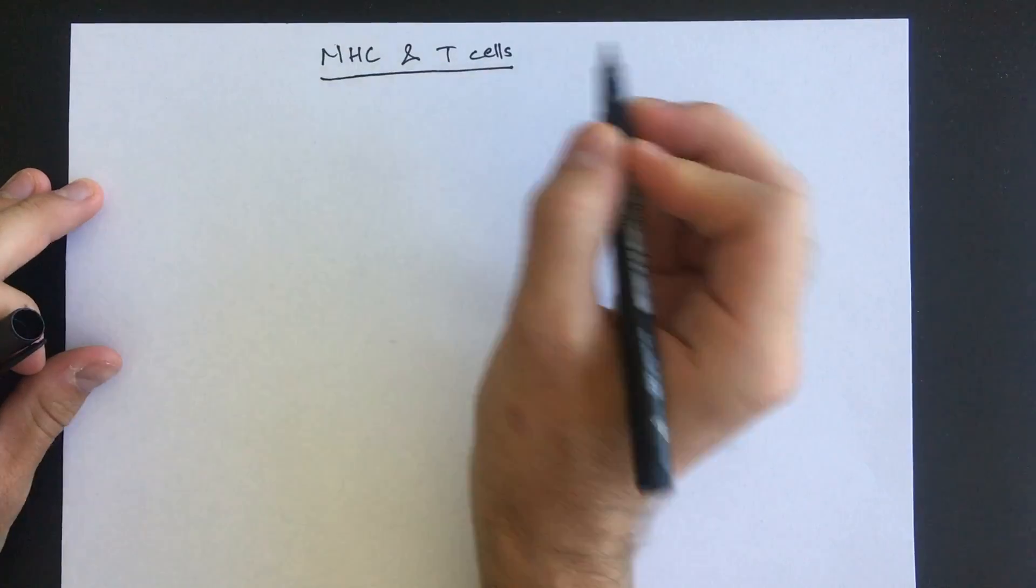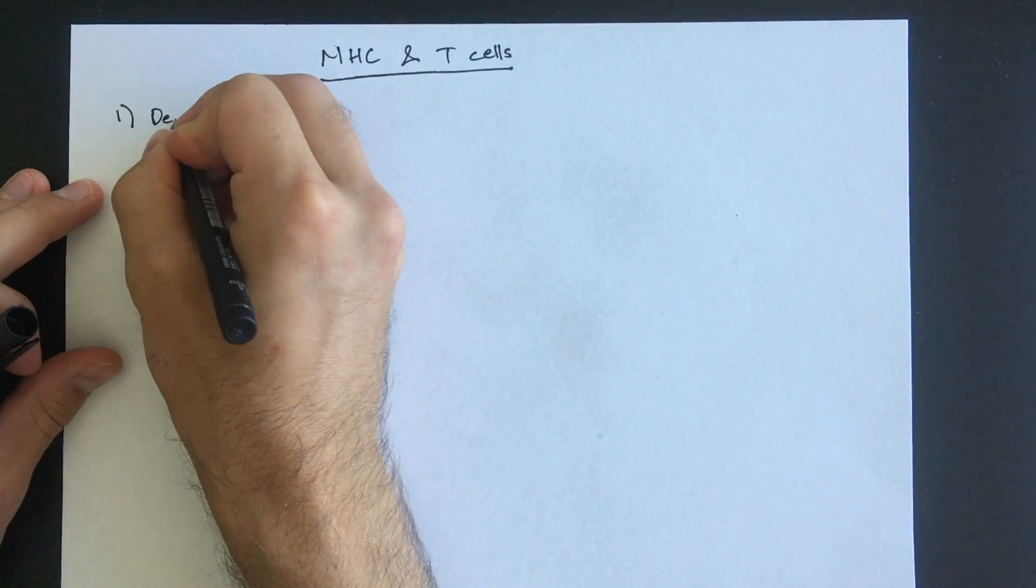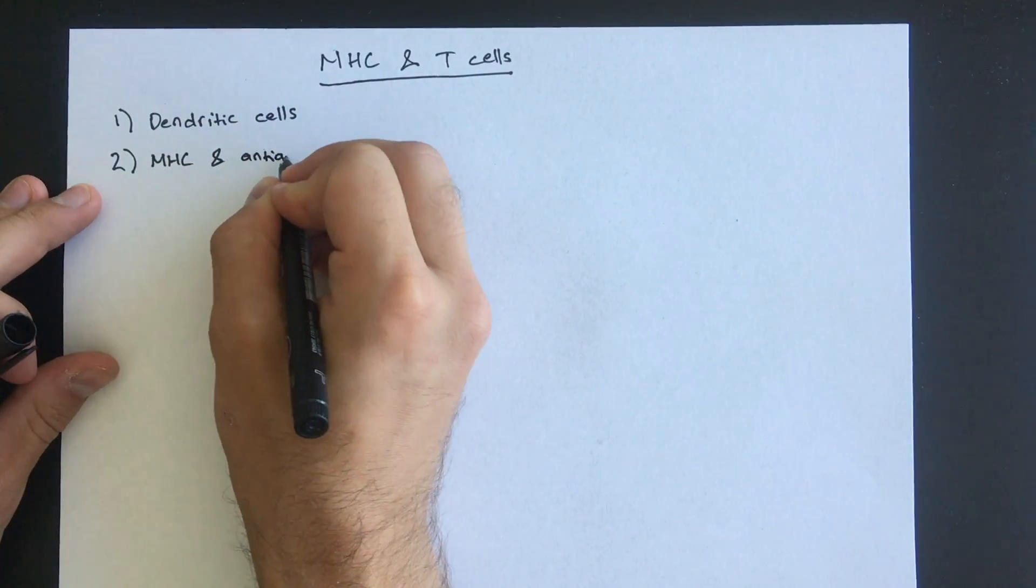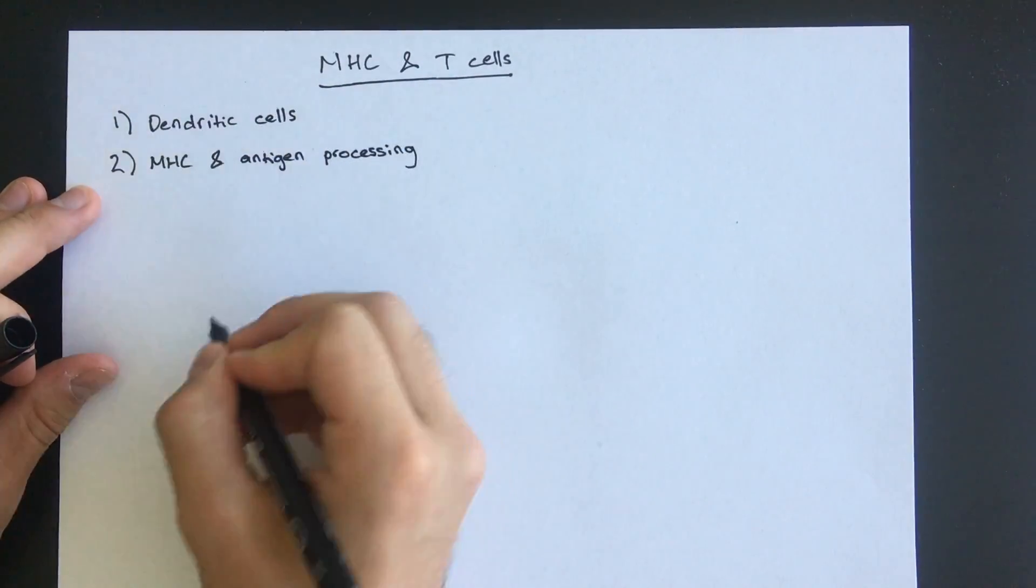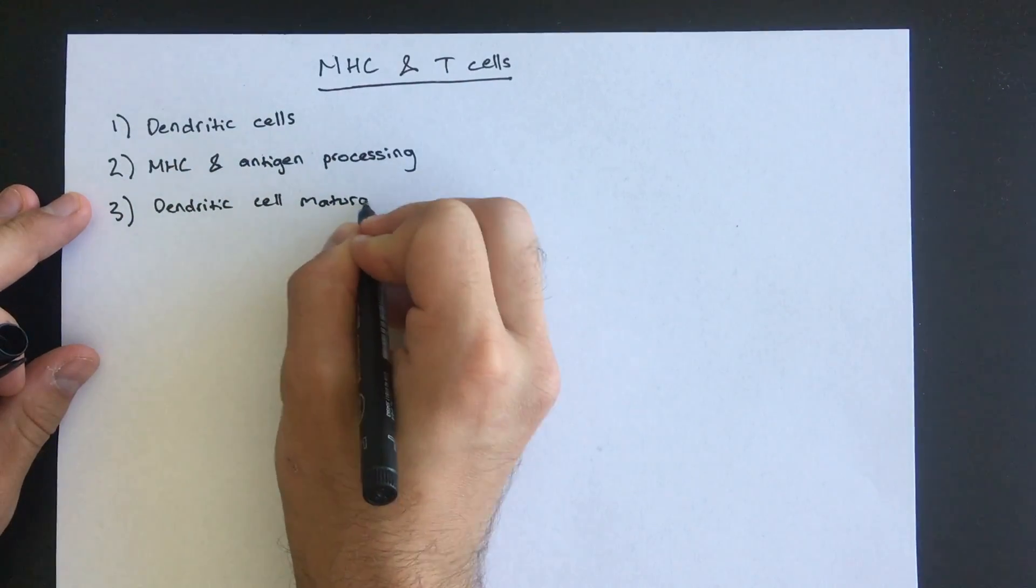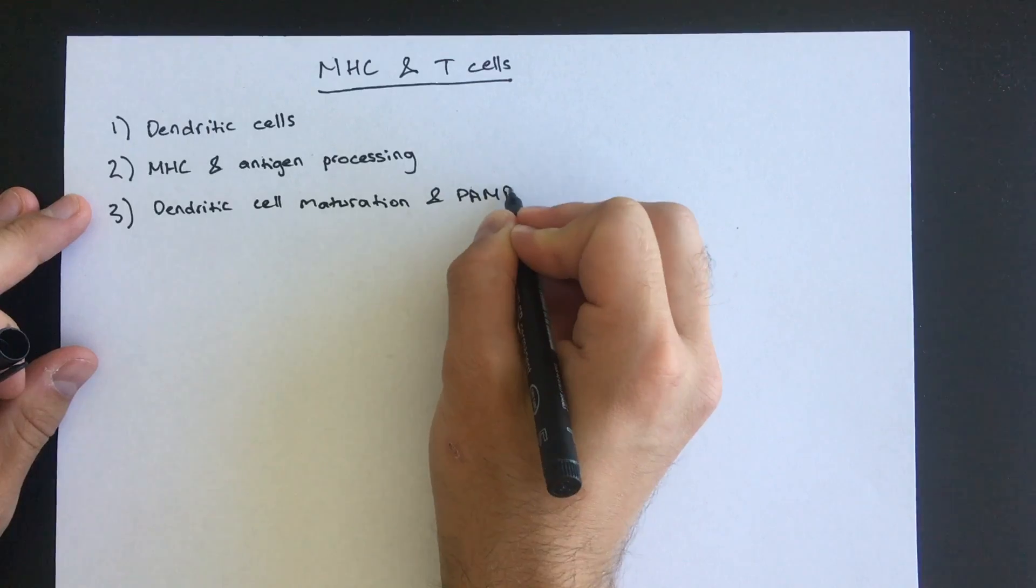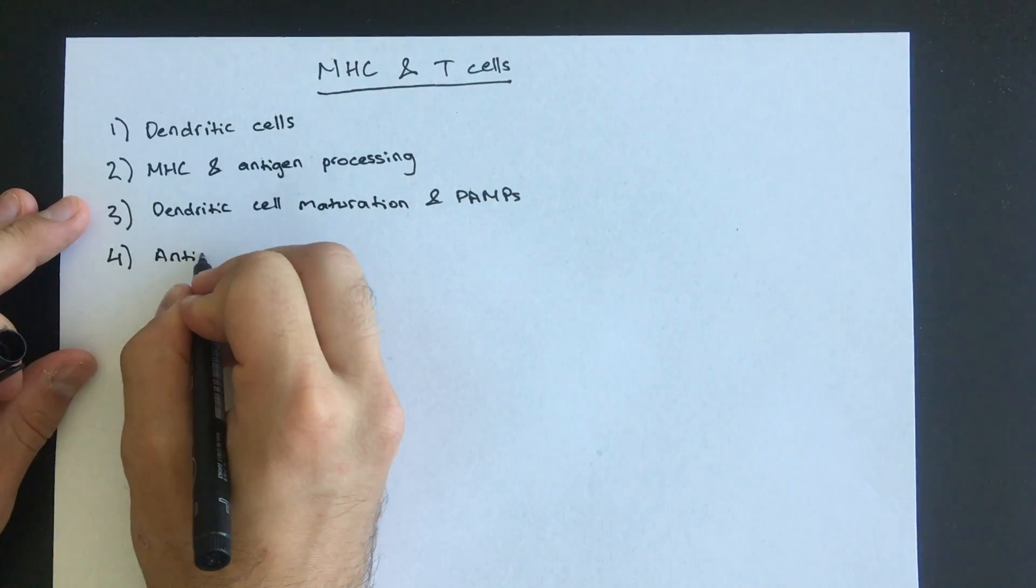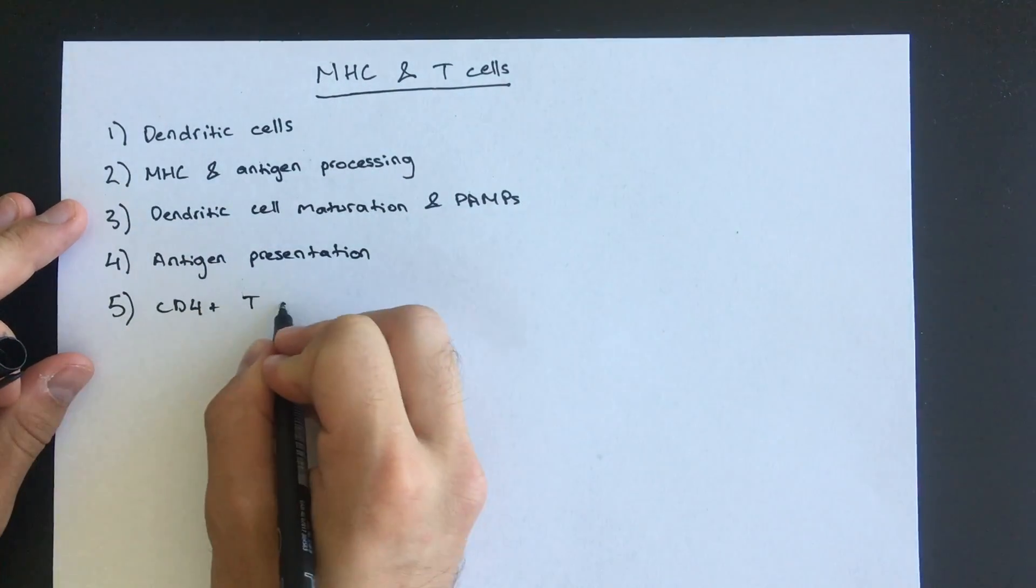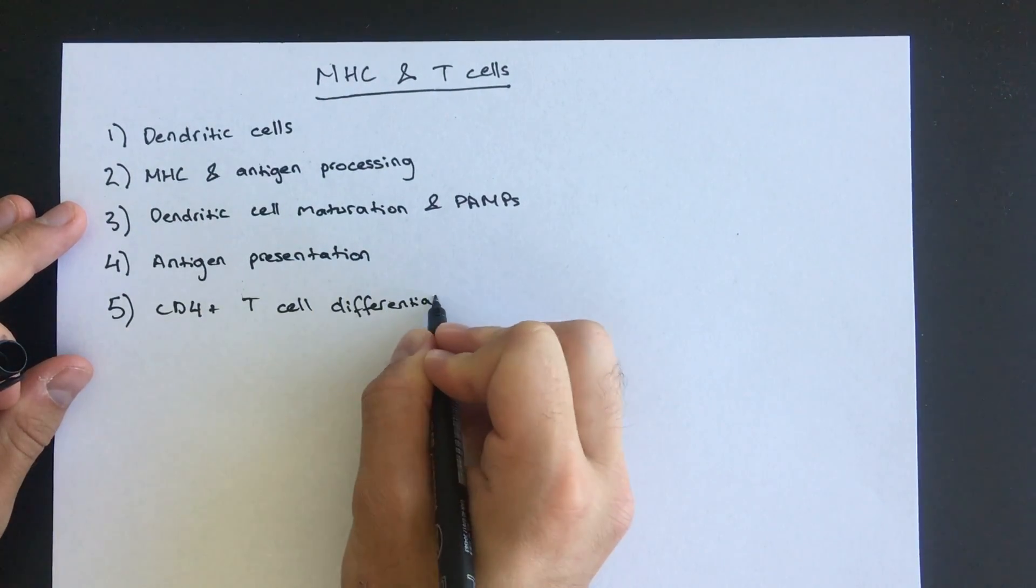To go through T cells though, we need to first talk about dendritic cells. Next I will briefly go through the MHC genes and antigen processing. Third, we will be going through the dendritic cell maturation process and have a discussion of PAMPs. Finally, we will get to antigen presentation leading to T cell activation and how T helper cells differentiate to perform their various roles in the immune response.